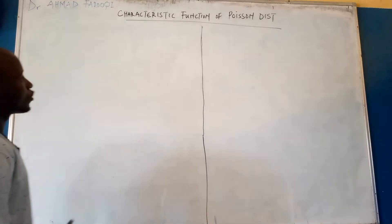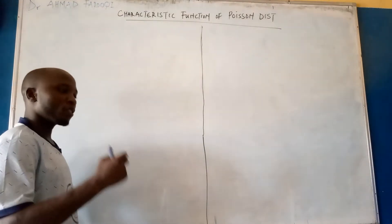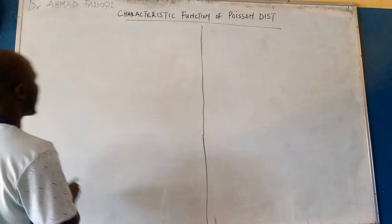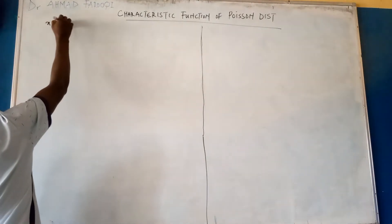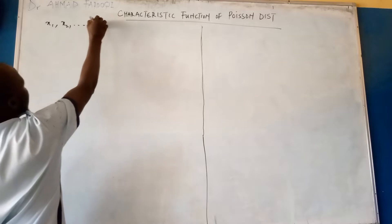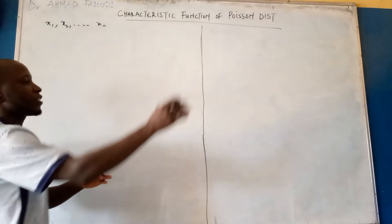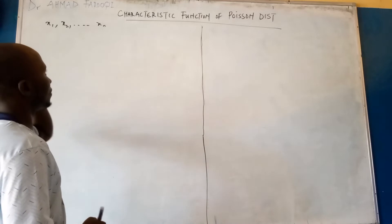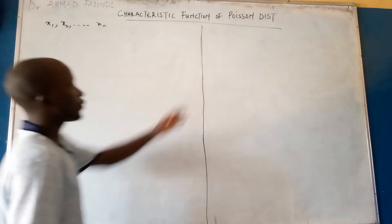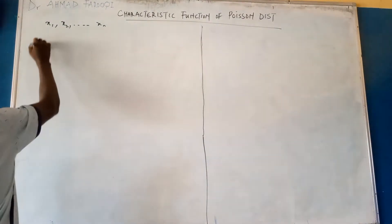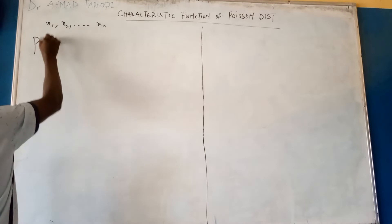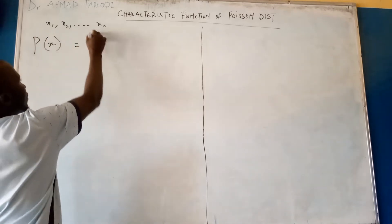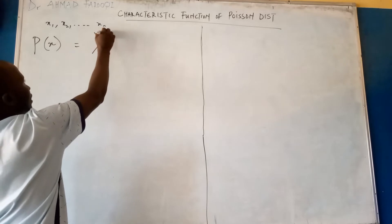Now, suppose we have a set of positive random variables x1, x2, ..., xn to infinity. The probability density function for Poisson is given as p of x, or f of x, equals lambda to the power x.